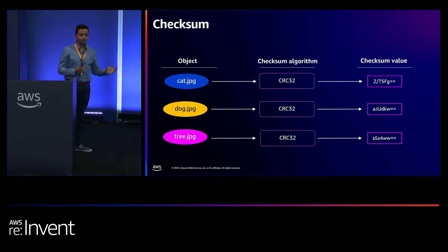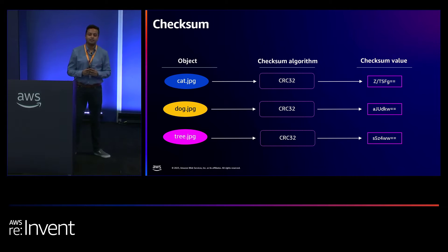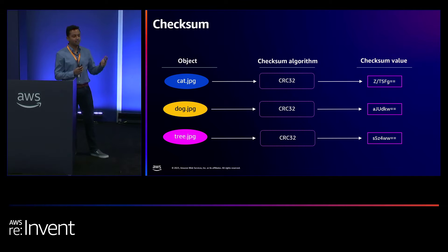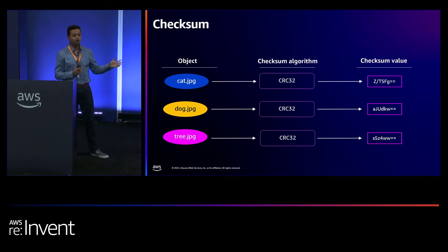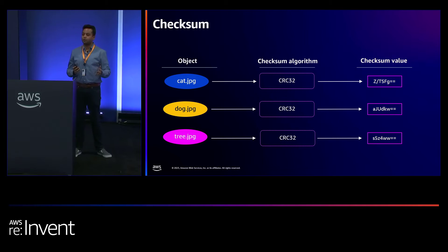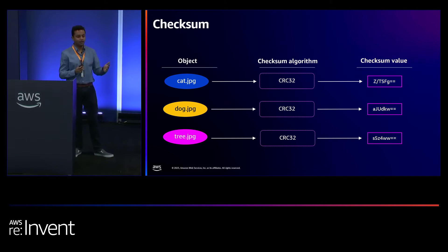Amazon S3 does a combination of CRC, SHA-256, and MD5 algorithms for all data in transit or at rest. All the capabilities I'm going to talk about today are additional tooling on top of the data validation that we already perform.